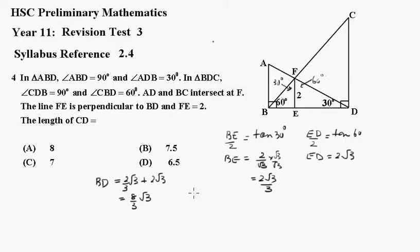So now we can say that CD over BD is equal to the tan of 60. CD over BD is the tan of this angle here. So it means that CD over BD,